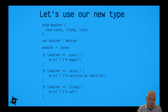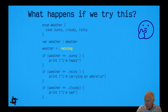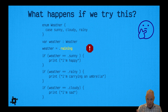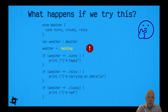Let me show you why this is more reliable. What if we typed weather equals dot raining? At compile time, the compiler looks for dot raining as one of the case opportunities in the enumeration — and it's not listed there. So this is a compiler error, caught right when you type it. With strings, you could set the value to whatever you wanted and it would compile fine but produce a bug at runtime. With enumeration types, the compiler catches mistakes immediately.